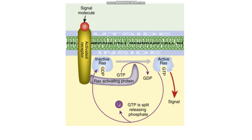A mutated RAS protein actually acts as an oncogene. What did we say an oncogene was? It's a proto-oncogene which is mutated, and these oncogenes promote cell growth and proliferation — promoting uncontrolled cell growth. So this is an example of an oncogene. The mutation of the RAS protein makes cyclins and CDKs, ensuring the cell continues through the cell cycle, inducing proliferation.